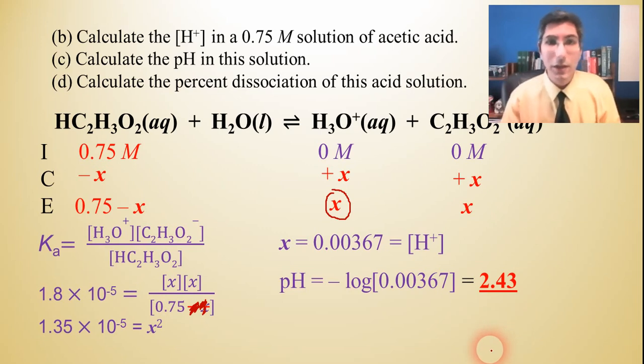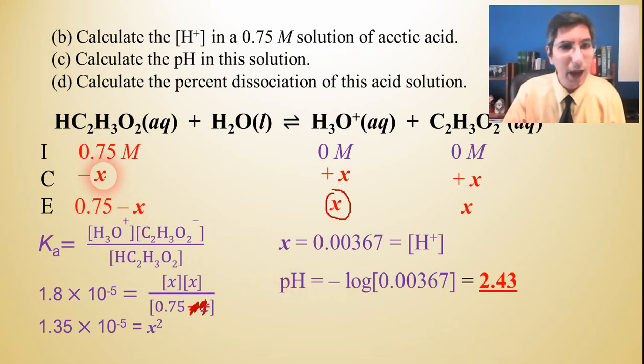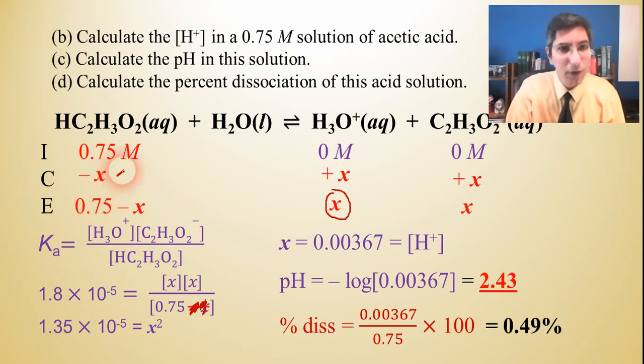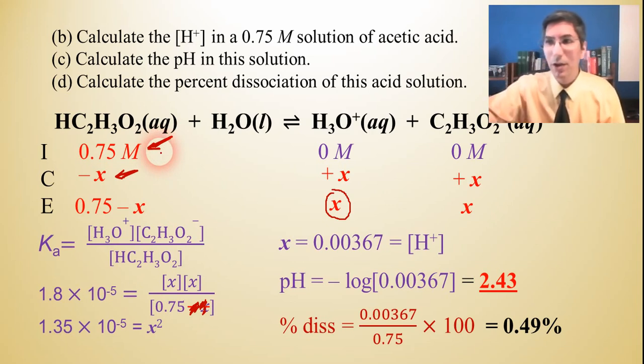Now part D, what is the percent dissociation of this acid solution? Well the way this works is we're going to take the x and divide it by what we were subtracting it from. So x divided by 0.75 in this case, of course times a hundred to make it into a percent. And it's going to be 0.49%. So that means that this acid is way less than 5% dissociated. Now if our answer had been over 5%, well then we'd have had to not ignore this minus x over here and go back in and use quadratic formula, which we really don't like to do. But percent dissociation is just this value right here divided by whatever that value is times a hundred. So there we have a good example of this.